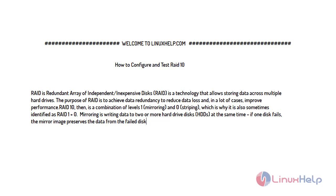RAID 10 is a combination of level 1, which is mirroring, and level 0, which is striping, which is why it is also sometimes identified as RAID 1+0. Mirroring is writing data to two or more hard drives at the same time; if one disk fails, the mirror image preserves the data from the failed disk.